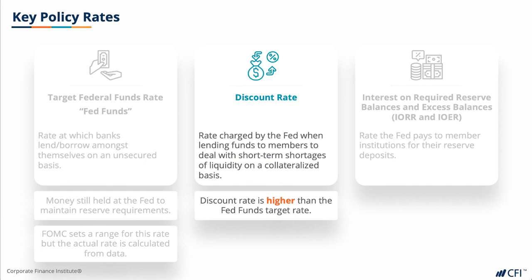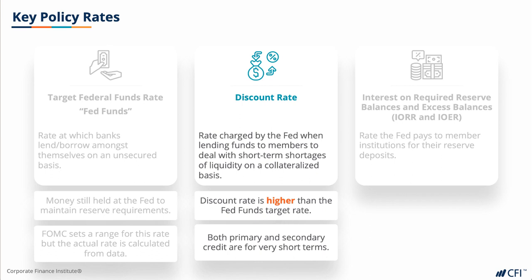The difference between primary and secondary credit is the creditworthiness of the borrowing member institution, and both types of credits are for very short-term, mostly overnight. Seasonal credit, on the other hand, can be longer term and is for member institutions that experience large seasonal swings in loans and deposits. This sort of borrowing is less common through the discount window as there's a stigma in the marketplace for using that window.